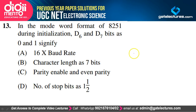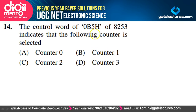In the mode word format of A251, during initialization, D6 and D7 bits as 0 and 1 signify the number of stop bits as 1.5. Option D is correct. The control word 0B5H of the 8253 macrocontroller indicates that counter 2 is selected. Option C is correct.